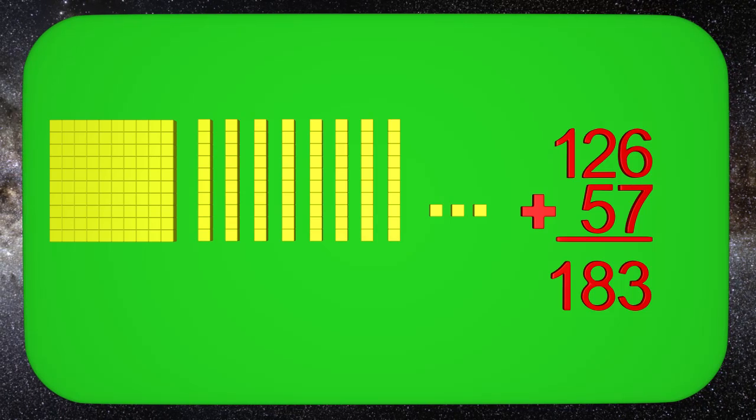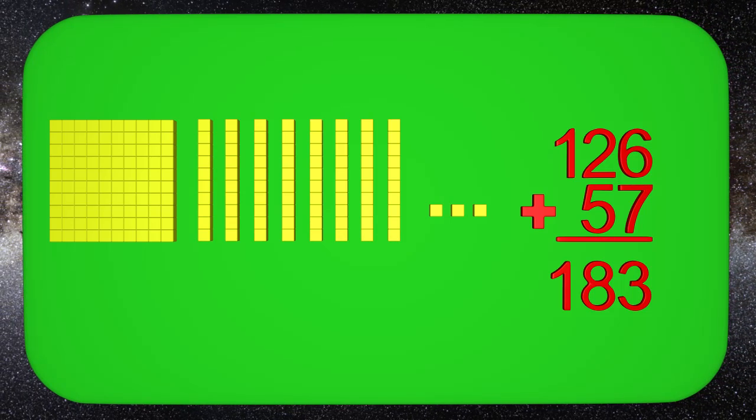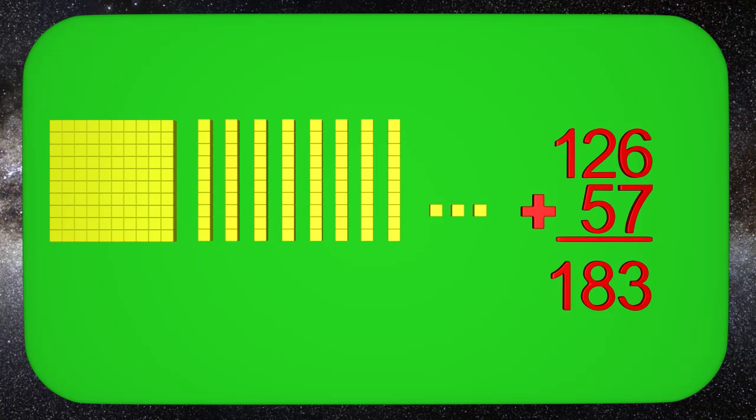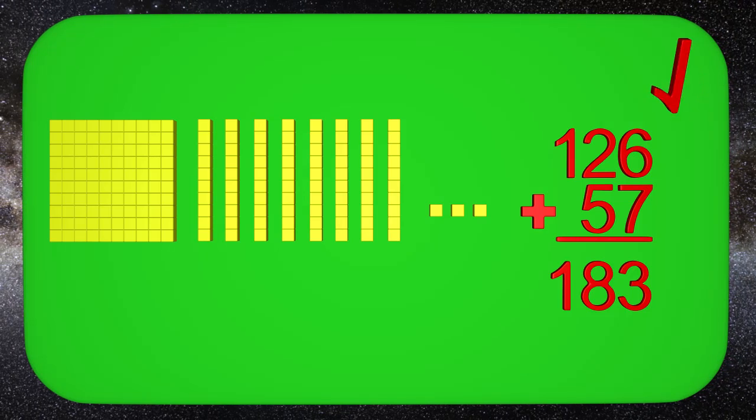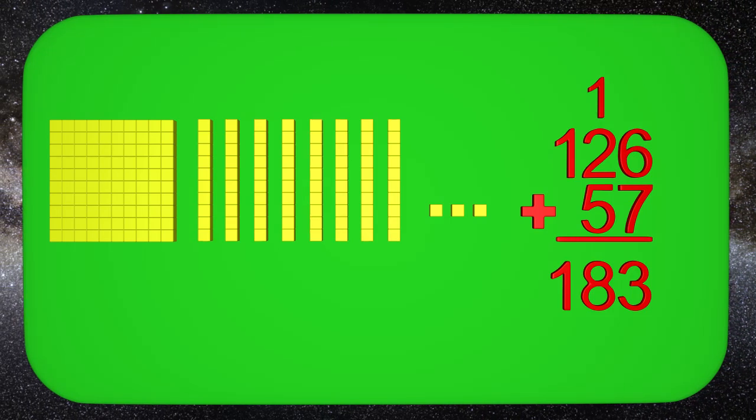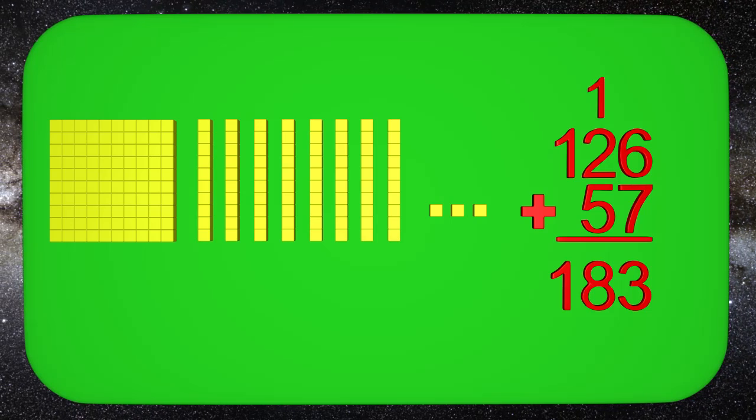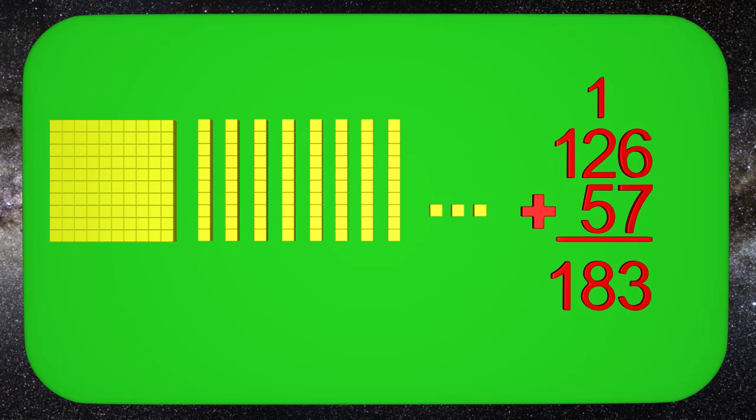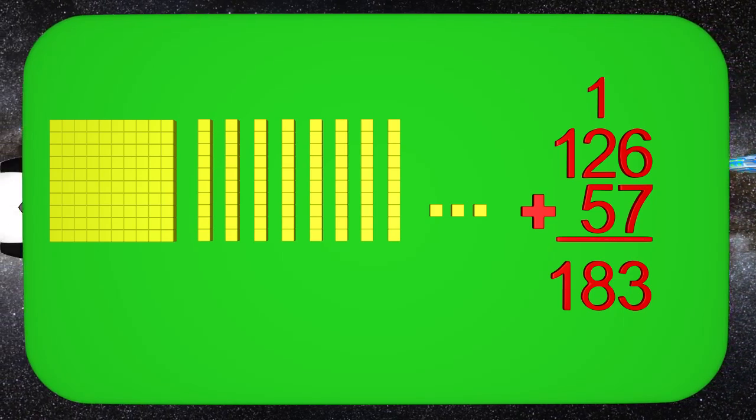If we take a look back at the ones place, we can see that we added 6 plus 7. We know that 6 plus 7 is 13. And if you recall, once we had 10 ones, we traded it for a tens block. So I put the 1 in the tens column. Looking at the tens place numbers, we have 1 at the top plus 2 plus 5, which gives us 8. And we have the 100. So the answer is 183. Amazing job, guys!